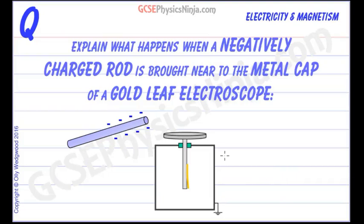Explain what happens when a negatively charged rod is brought near to the metal cap of a gold leaf electroscope. Here's a gold leaf electroscope. We've got a metal box and there's a metal cap and metal stem that is put inside the box.